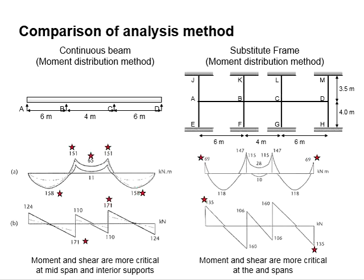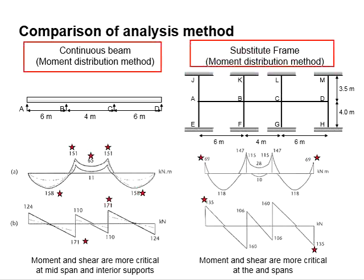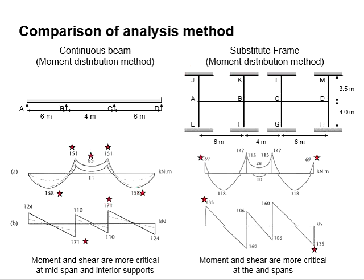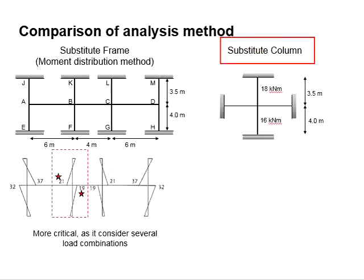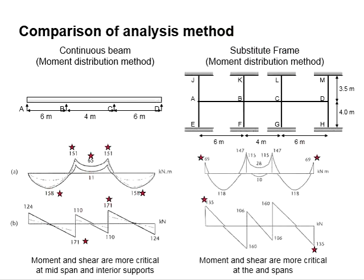In the previous videos, we have discussed three examples of analyzing a structure using three different methods of analysis, which include the moment distribution method for a continuous beam, the moment distribution method for a substitute frame, and also the analysis of the moment acting in the column. These examples are basically based on the same configurations of the structures.